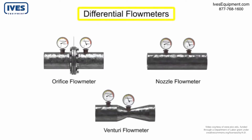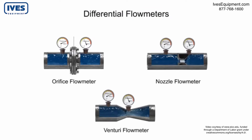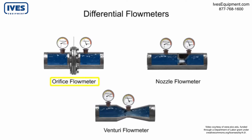The Differential Flow Meter is the most common device for measuring fluid flow through pipes. Flow rates and pressure differential of fluids such as gases, vapors, and liquids are explored using the orifice plate flow meter.